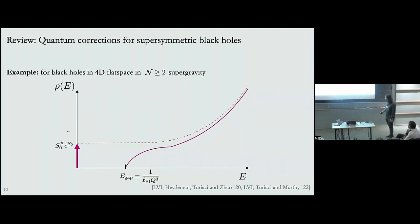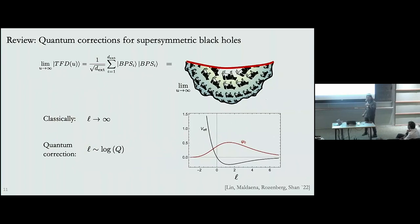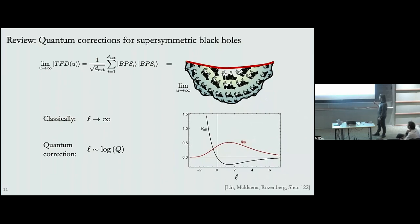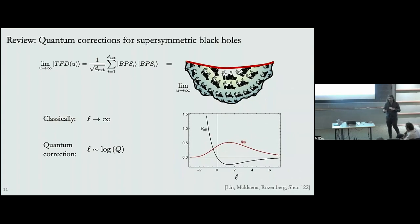There's another, more geometric way to see that these extremal solutions should not be trusted. This was discussed in a paper from this summer, obtained by constructing a spatial wormhole by looking at the thermal field double state at infinite Euclidean time. In a sector of fixed charge, you're essentially projecting down to the linear combination of ground states — a maximally entangled combination of BPS states between left and right.